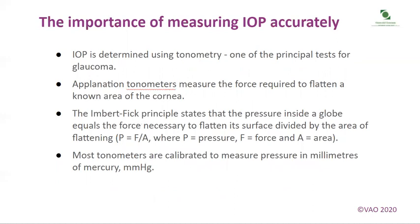The importance of measuring IOP accurately: IOP is determined using tonometry, one of the principal tests for glaucoma. Aplanation tonometers measure the force required to flatten a known area of the cornea. The Imbert-Fick principle states that the pressure inside a globe equals the force necessary to flatten its surface divided by the area of flattening: P = F/A, where P is the pressure, F is the force, and A is the area. Most tonometers are calibrated to measure pressure in millimetres of mercury (mmHg).